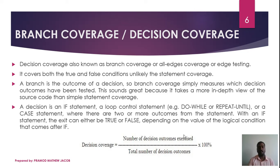Decision coverage is calculated as the number of decision outcomes exercised divided by the total number of decision outcomes, multiplied by 100%. For example, if our program has two conditional statements and we execute only one of them, the decision coverage will be 1 divided by 2 into 100%, which gives 50% decision coverage.